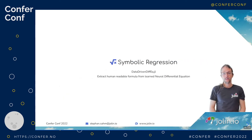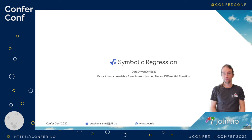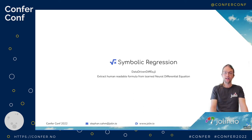Finally, a note about symbolic regression. There's a package called DataDrivenDifferentialEquations.jl — just Google it and check it out. There are a couple of methods how you can extract a symbolic representation — a human-readable formula — from the learned neural differential equations. It's really nice to have these neural differential equations to learn arbitrary relations, and you can even get standard symbolic representations out of them. Check it out — it's super powerful.